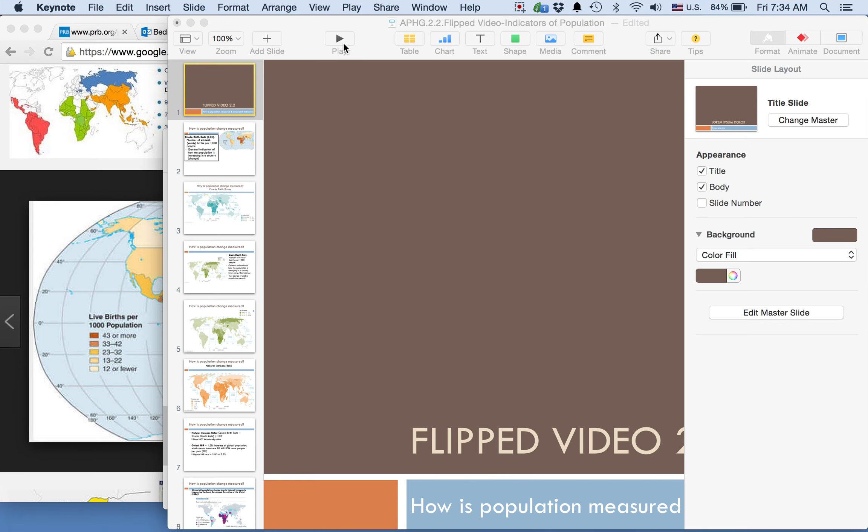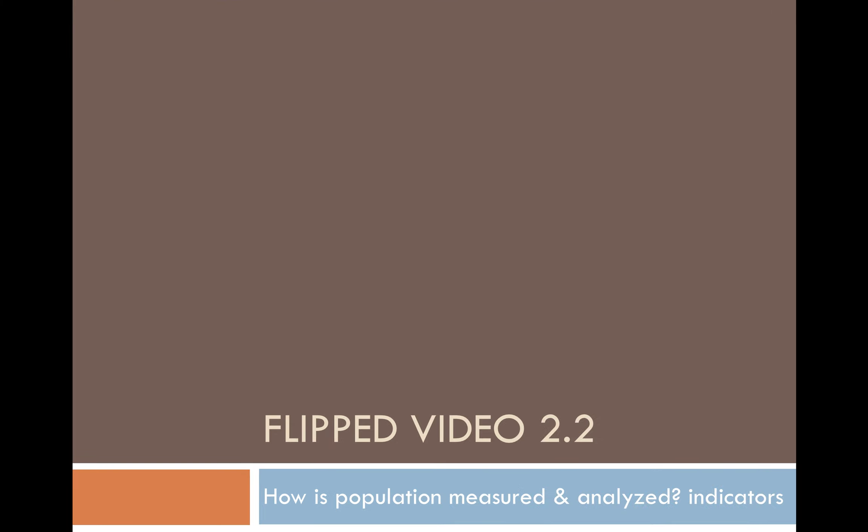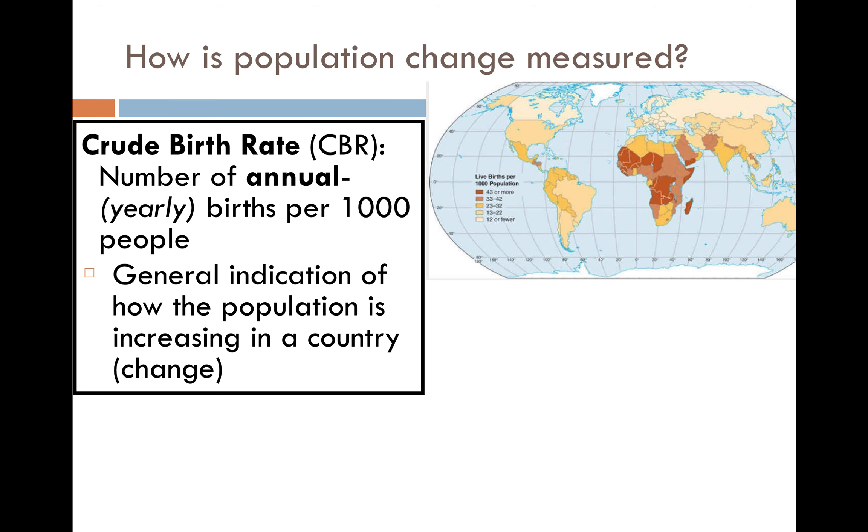Hi everyone, welcome to your second flip video for our population unit. We're going to continue with our discussion of how population is measured and analyzed, but this time we're going to be taking a look at specific indicators that geographers use — in other words, terms. These terms will allow us to both characterize the population and overall study its demographics, which refers to the characteristics of the population itself.